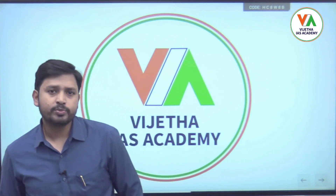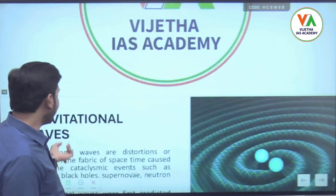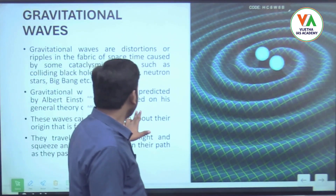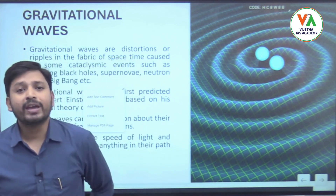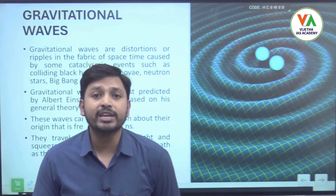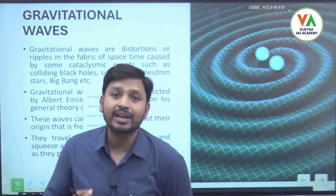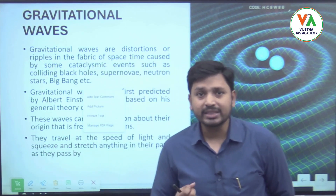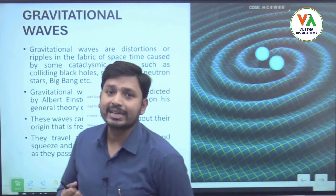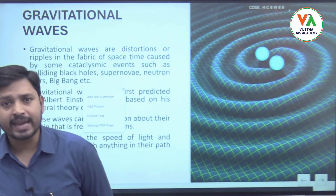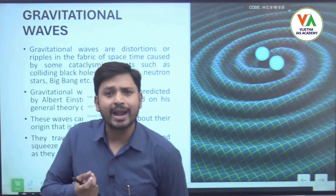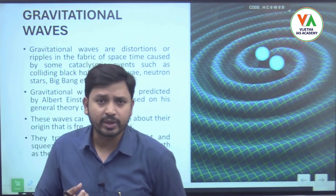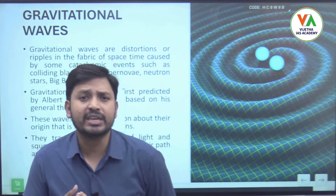Gravitational waves are nothing but vibrations or distortions occurring in the space-time fabric. However, these vibrations and distortions occur only when a very huge event takes place — what is called a cataclysmic event.